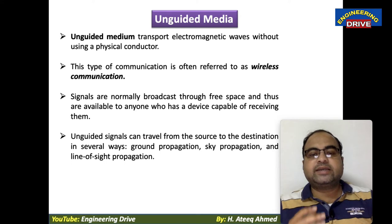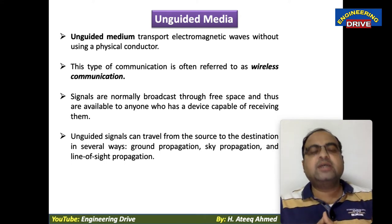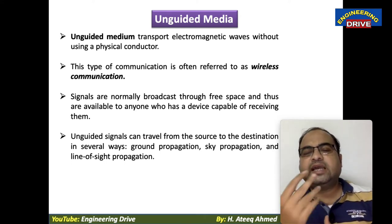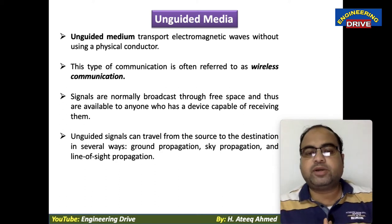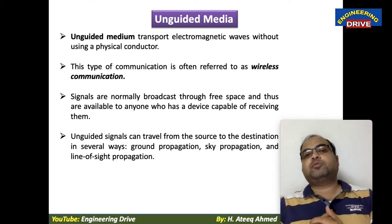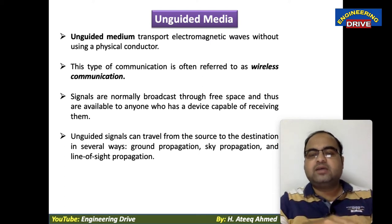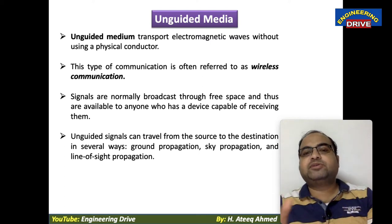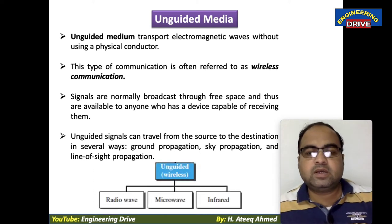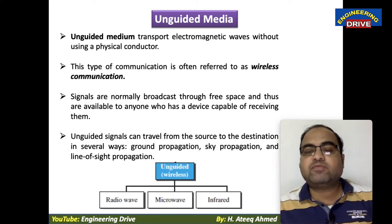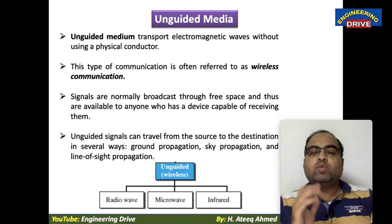Unguided signals can travel from the source to the destination in several ways: ground propagation, sky propagation, and line-of-sight propagation. These are the various ways in which data can be transmitted.